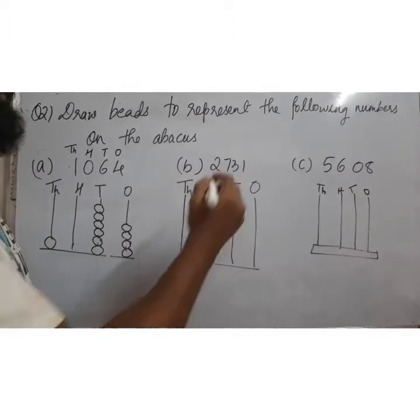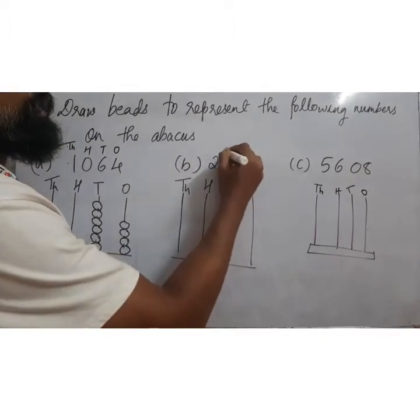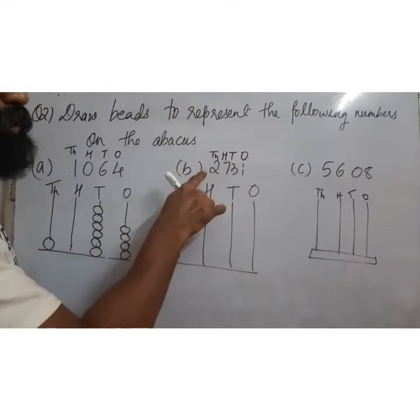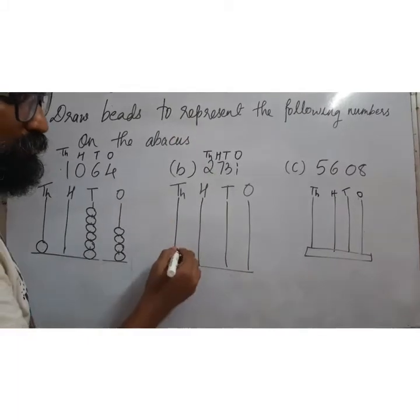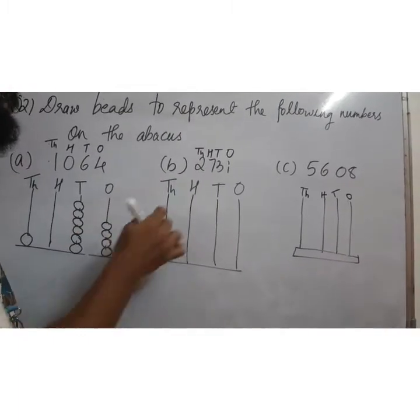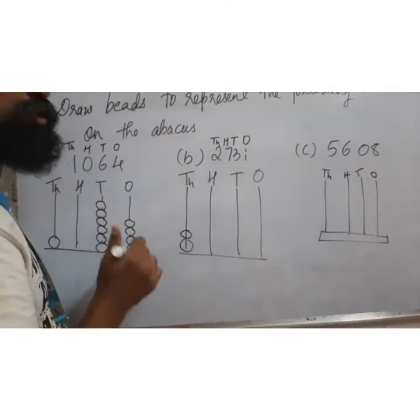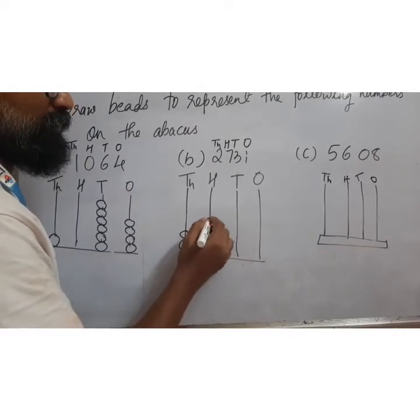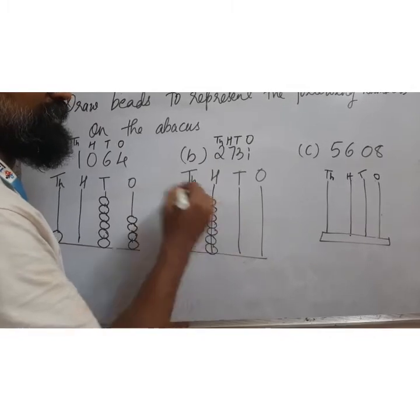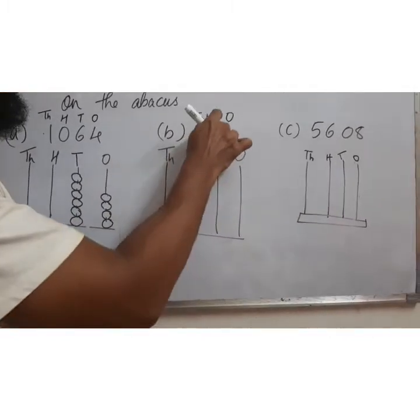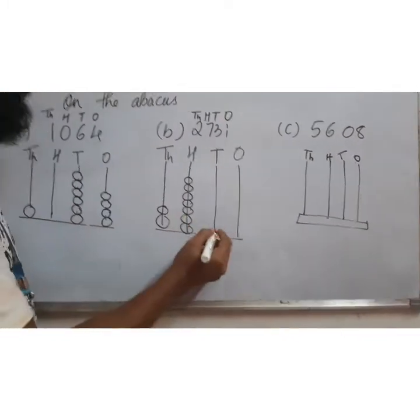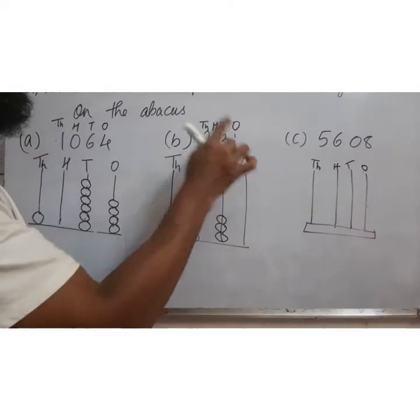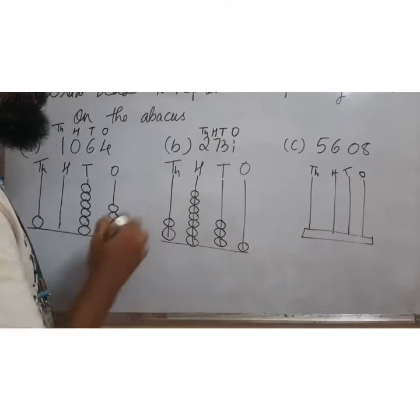Second one, let's see. Ones, tens, hundreds, thousands. In 1000, we will make 2 beats. How many beats? 2. 1, 2. In hundreds, we will make 7 beats. 1, 2, 3, 4, 5, 6, 7. Seven beats. Now, tens ke ghar pe how many? 3 beats have to make. 1, 2, 3. Ones ke ghar pe just 1. Easy.